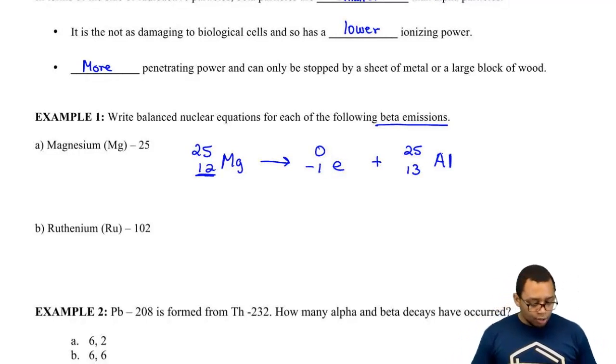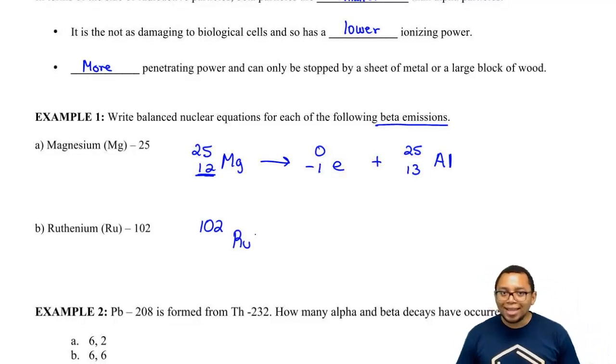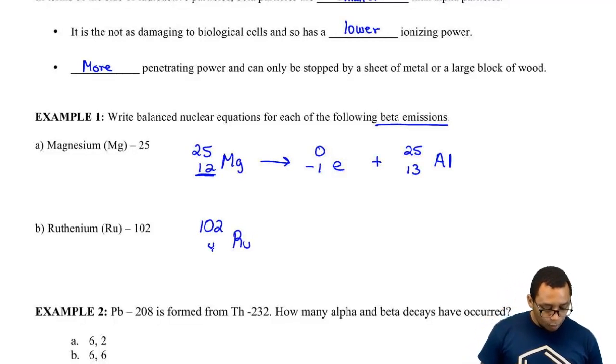Now ruthenium, Ru-102. If we look at our periodic table, ruthenium has an atomic number of 44. Again, we're going to emit a beta particle.